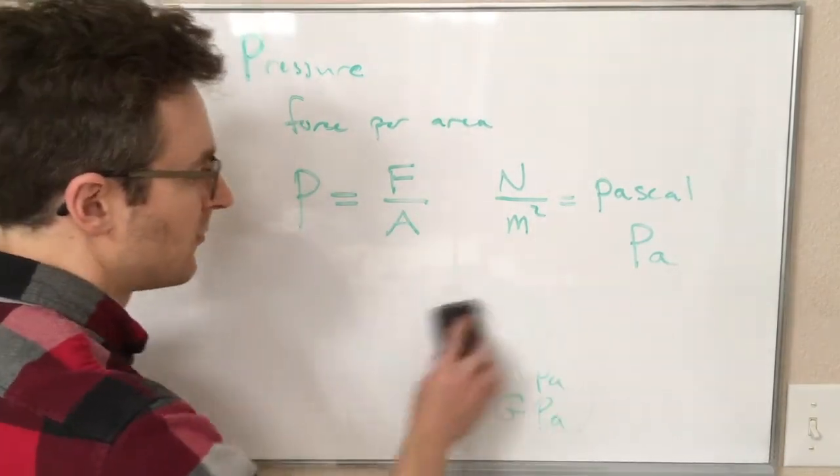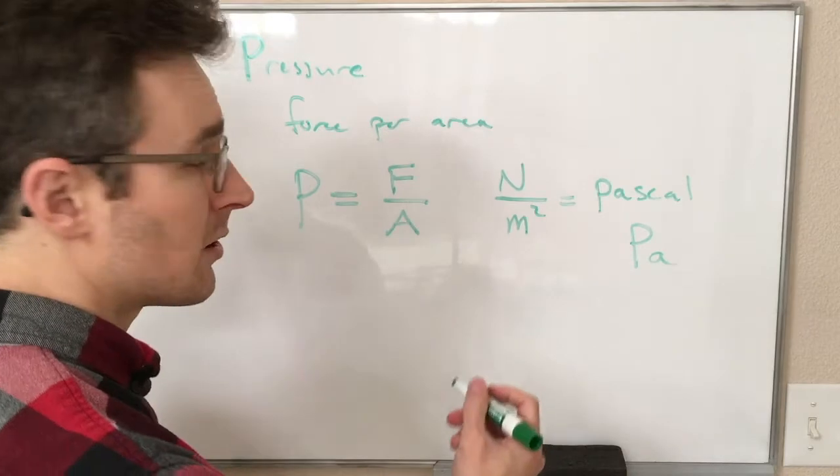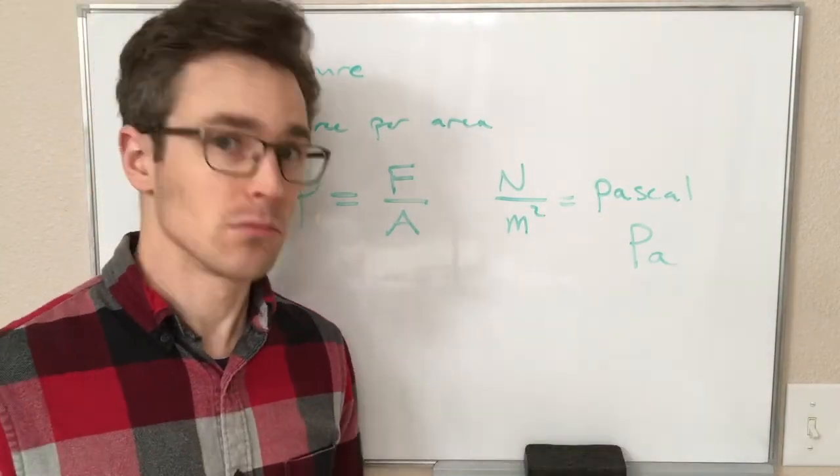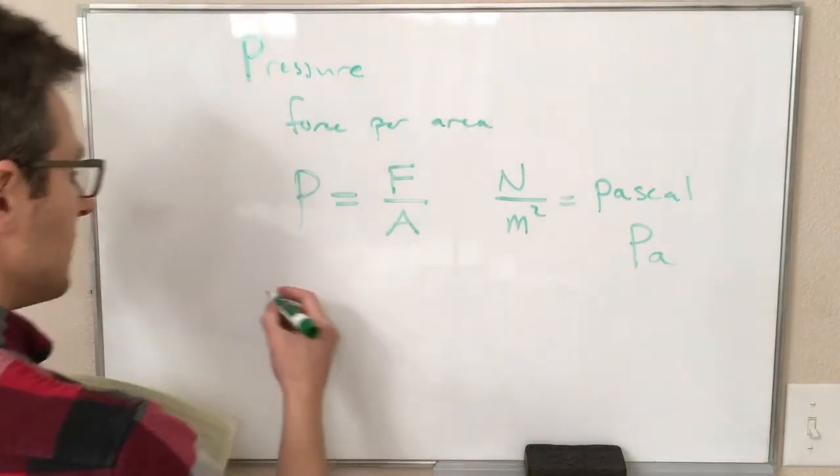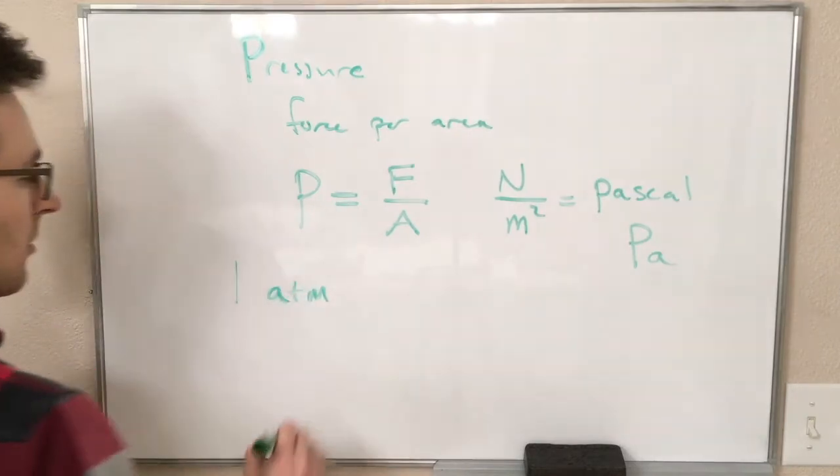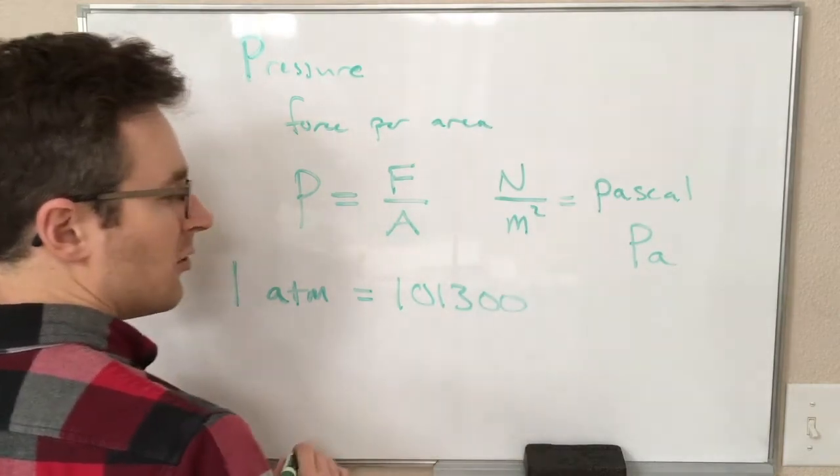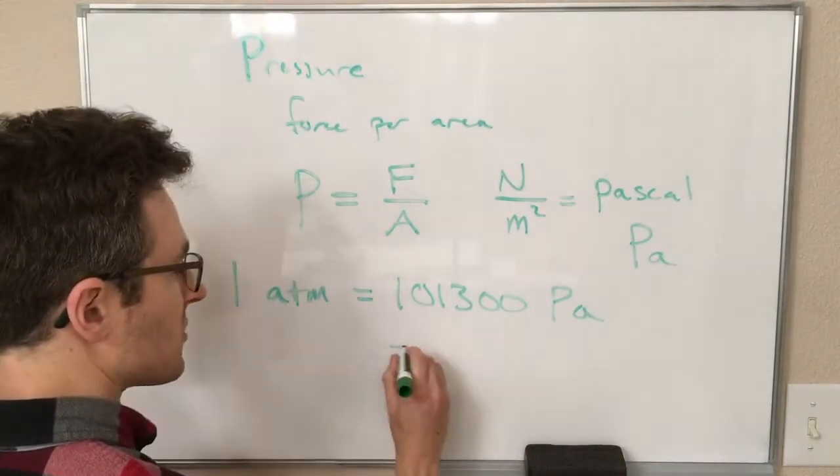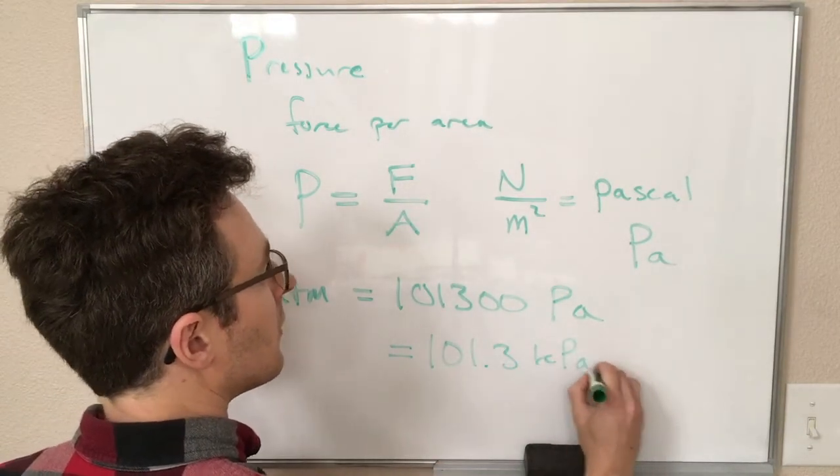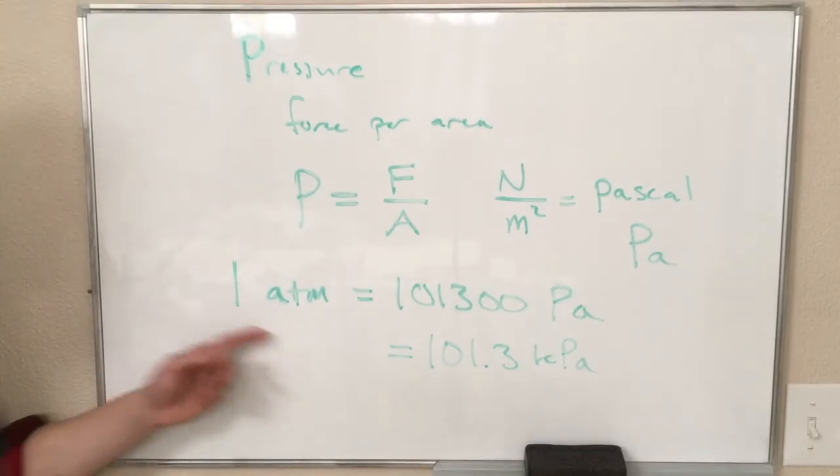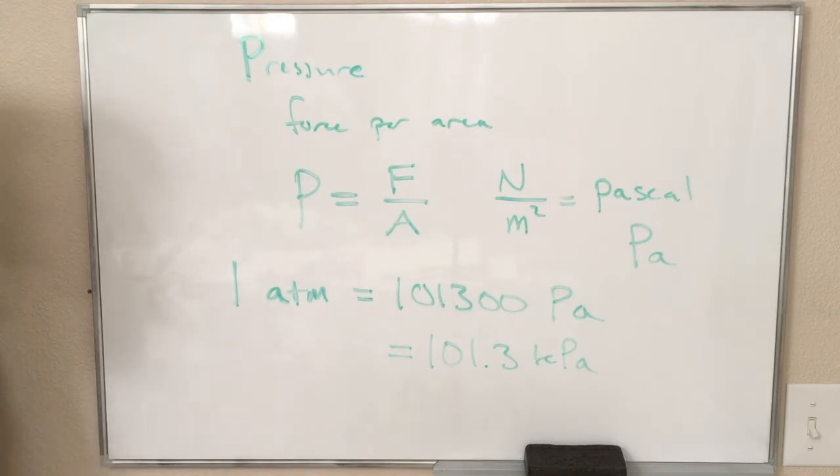Some other pressure units that might be good to know. One is the atmosphere. So that is the pressure of the air, the fluid air, at sea level. So that's abbreviated ATM. So one atmosphere is equal to 101,300 pascals or 101.3 kilopascals. So this is very common if you're trying to do a problem that has, that you need to know the air pressure at sea level or the air pressure in your room, this is the SI value to use, 101,300 pascals.